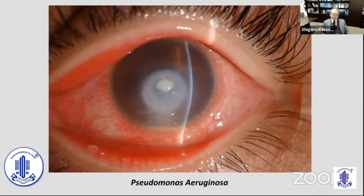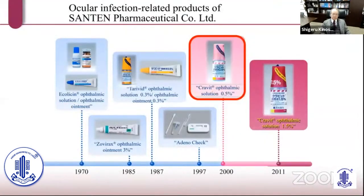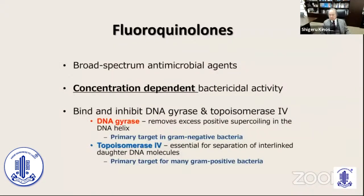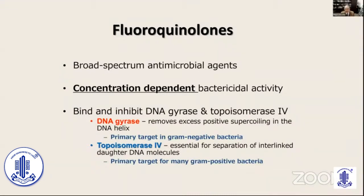Regarding levofloxacin in Japan: Santen Pharmaceutical released Cravit ophthalmic solution 0.5 percent 20 years ago, and 10 years later developed Cravit 1.5 percent. We now have about 10 years of experience with 1.5 percent levofloxacin eye drops. Fluoroquinolones are broad-spectrum antimicrobial agents and the key is their concentration-dependent bactericidal activity.